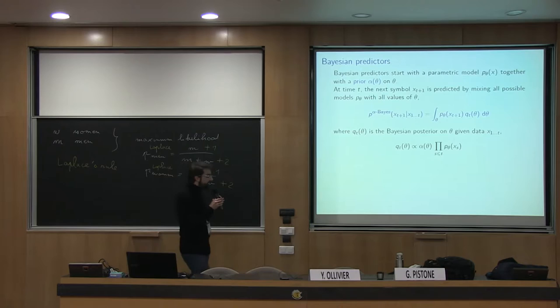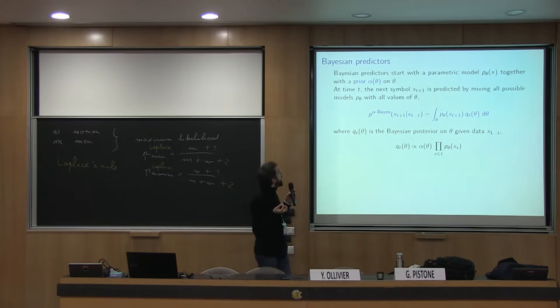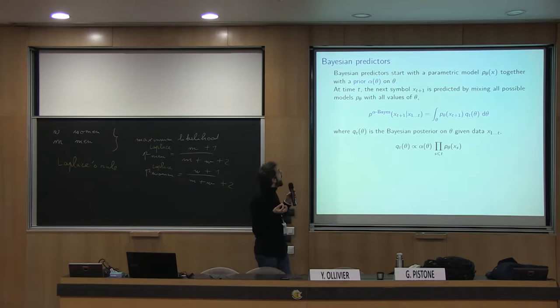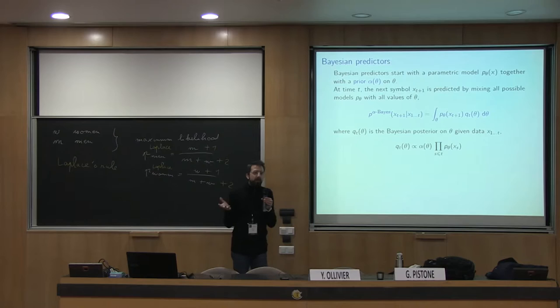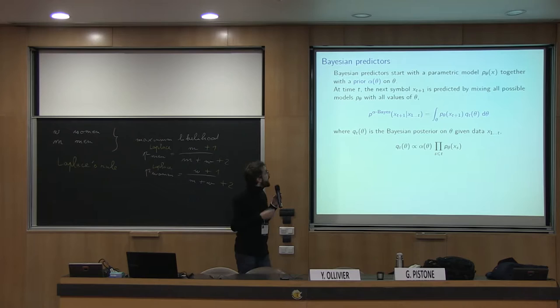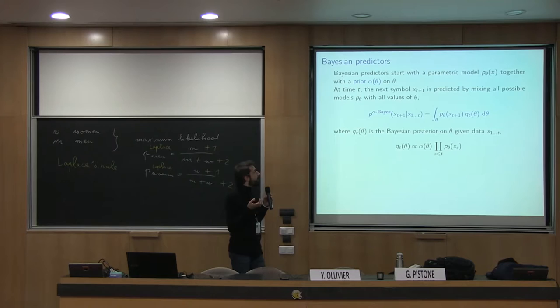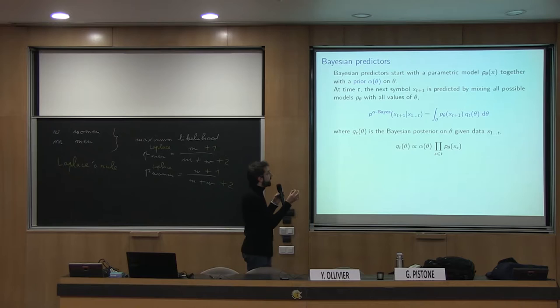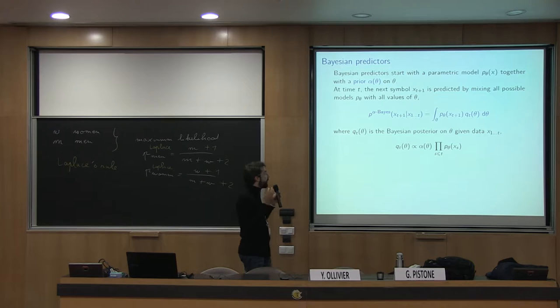To define what a Bayesian predictor is: if you start with a parametric model p_theta for your data x, and you have an idea of possible values of theta represented by a prior — a probability distribution alpha of theta — then at each time, the next symbol is computed according to a mixture of all possible values of theta. That's an integral of p_theta for X_{t+1} weighted by the posterior q_t of theta, which is given by the Bayesian formula: the posterior q_t(theta) is proportional to the probability of past data multiplied by the prior of theta.